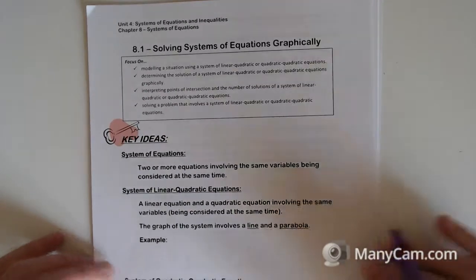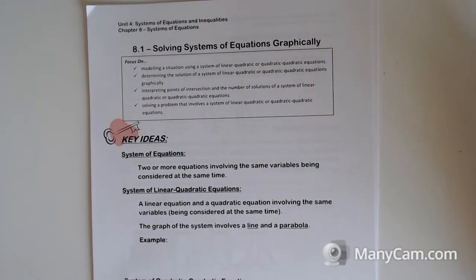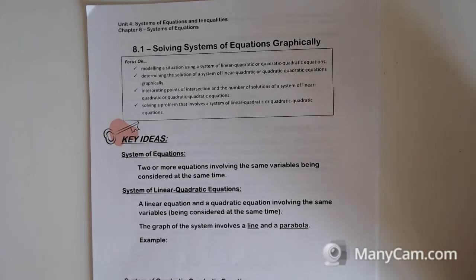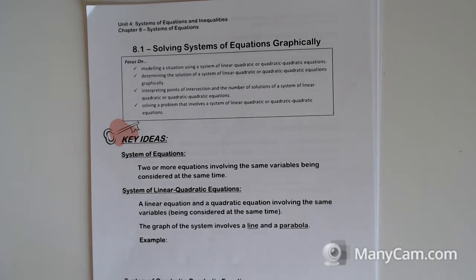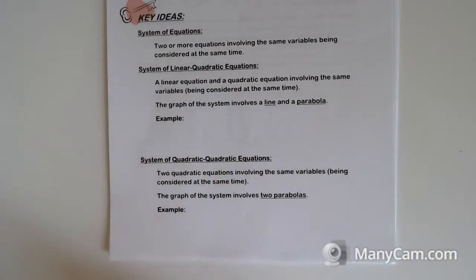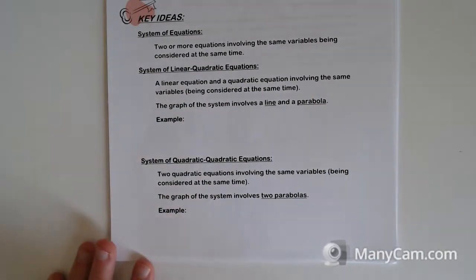We've done systems of equations with linear ones in grade 10 quite a bit, and we've actually been looking at them again throughout this year. We should be somewhat familiar with substitution and elimination methods. We're going to be looking at it with different types of functions now, which is the only new thing. A system of equations is two or more equations involving the same variables being considered at the same time. They can be graphed on the same graph.